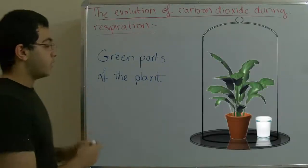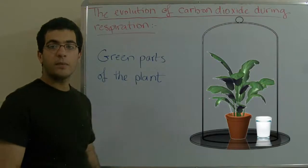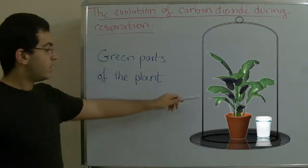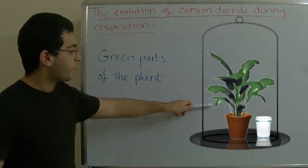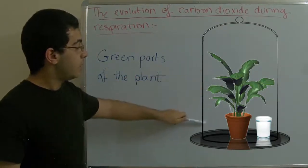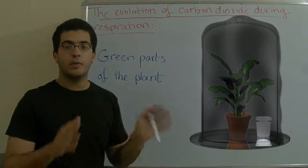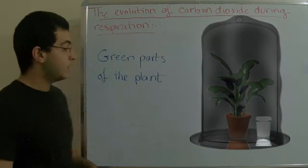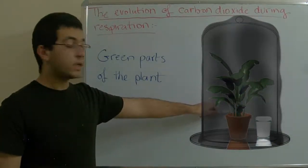We are going to have an apparatus like this. We have this cover here, a beaker which is put upside down with a black cloth over it, and inside we have a plant inside a pot.